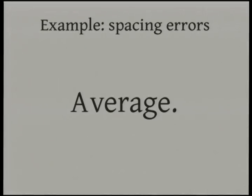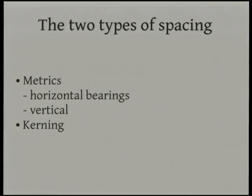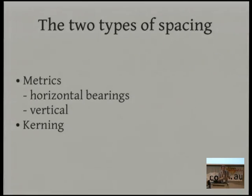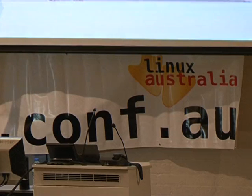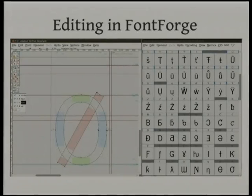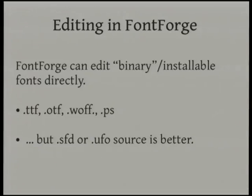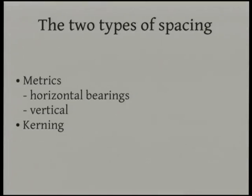Here's an example of a spacing error: the A and the V are way too far apart. Those two lines are at the same angle, so if you measured from the rightmost point of the A and the leftmost point of the V, you'd have extra space in between. The font should be able to tell the computer that when these characters are next to each other, screw them together — and that's what kerning is. Horizontal bearings are how much space is before and after a character. You can fix that by opening the glyph editor in FontForge and scooting those bearing lines back and forth.